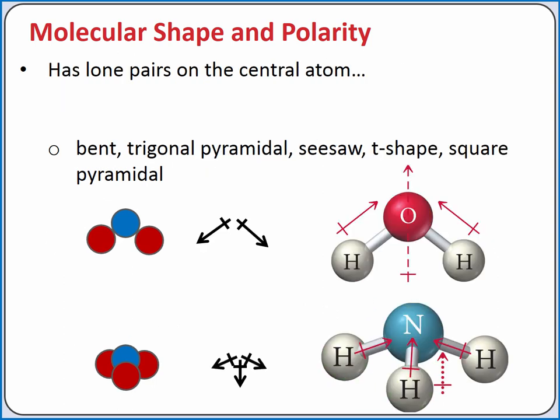If the central atom has lone pairs of electrons, then even if a molecule has all identical polar bonds, they cannot cancel each other out. The molecule will still be polar. This is the case for bent, trigonal pyramidal, seesaw, T-shape, and square pyramidal molecular geometries. Even identical polar bonds do not cancel each other out in these geometries.